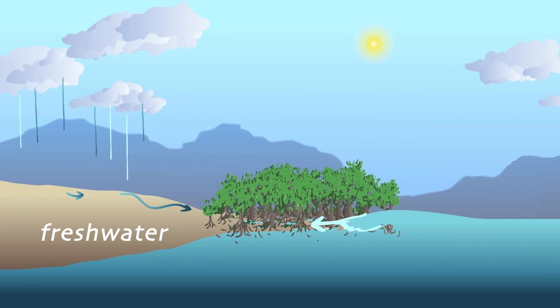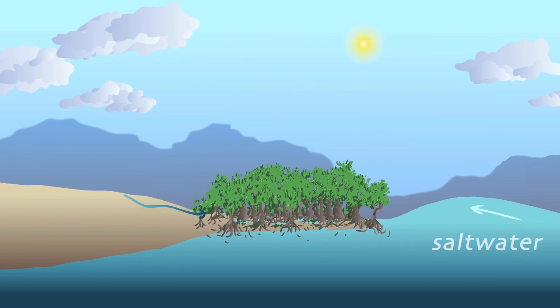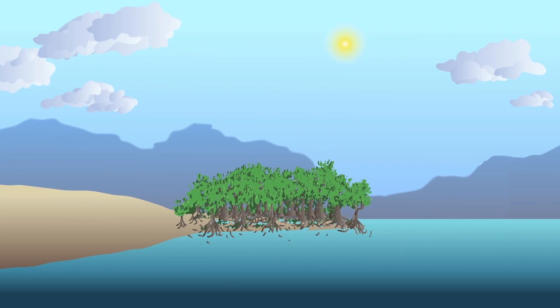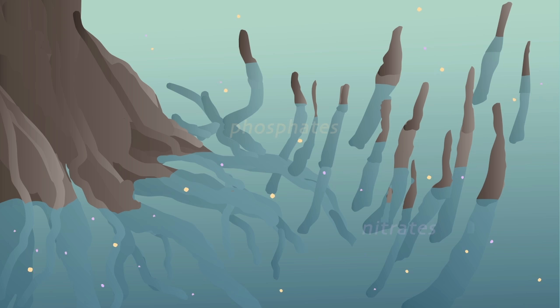Mangroves receive water from two sources: inland watersheds and the ocean tides. These bring rich nutrients which the mangroves trap in their dense root systems like a filter.